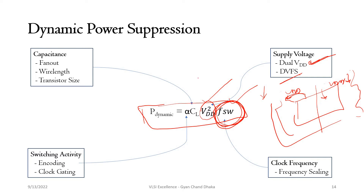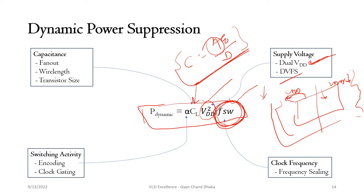Dynamic power dissipation also depends on the load capacitance. The capacitance formula is C = A·ε / D, where A is the cross-sectional area and D is the distance between the two plates of the capacitor. If we consider an inverter circuit followed by another inverter, both input and output nodes have associated capacitances.